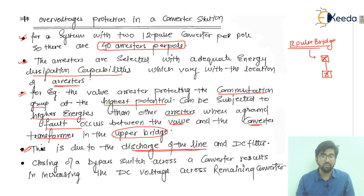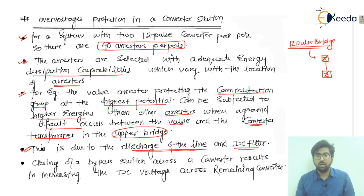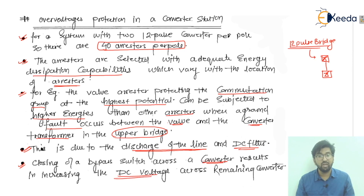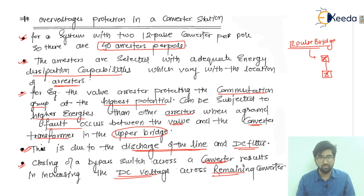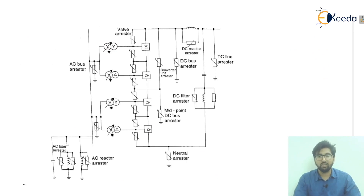There will be a carry of charges and the discharge will take place from the line, and also from the DC filters. The closing of the bypass switch across the converter results in increasing the DC voltage across the remaining converter. So when the bypass switch is in the closed condition, it will affect the other converter by increasing the DC voltage across it.